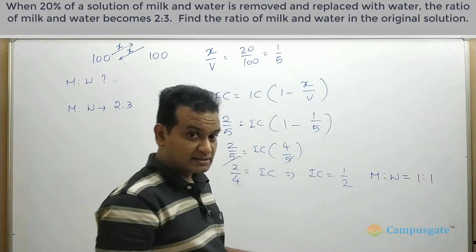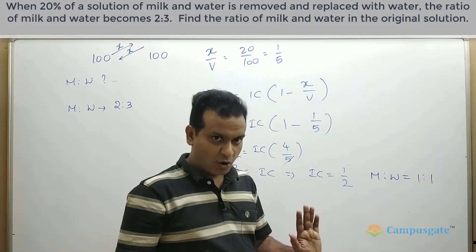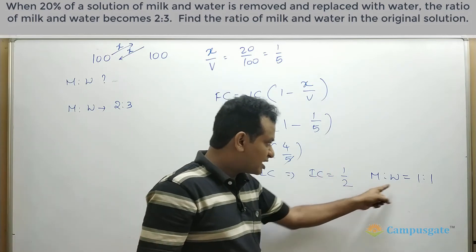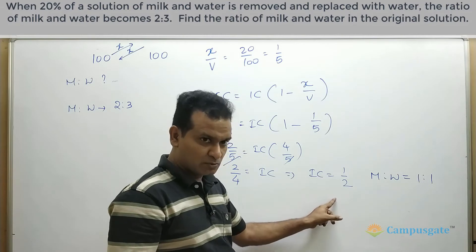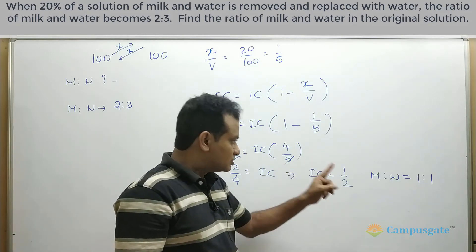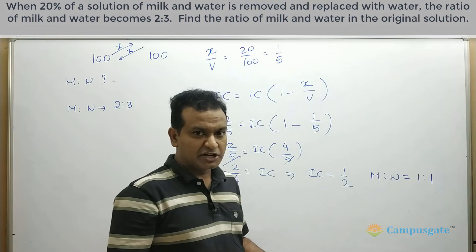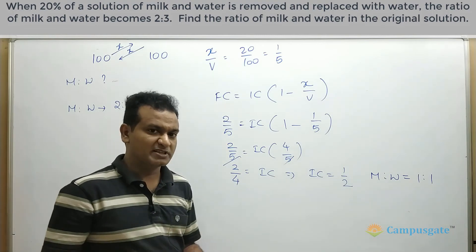So most of the students commit this mistake. If you put 1 is to 2, that will be wrong. Here we are asked to find milk and water. What we got here is the milk concentration. Milk concentration is 1 by 2. Out of 2 liters, there is only 1 liter milk. So therefore, milk and water ratio will be 1 is to 1. That should be the final answer.